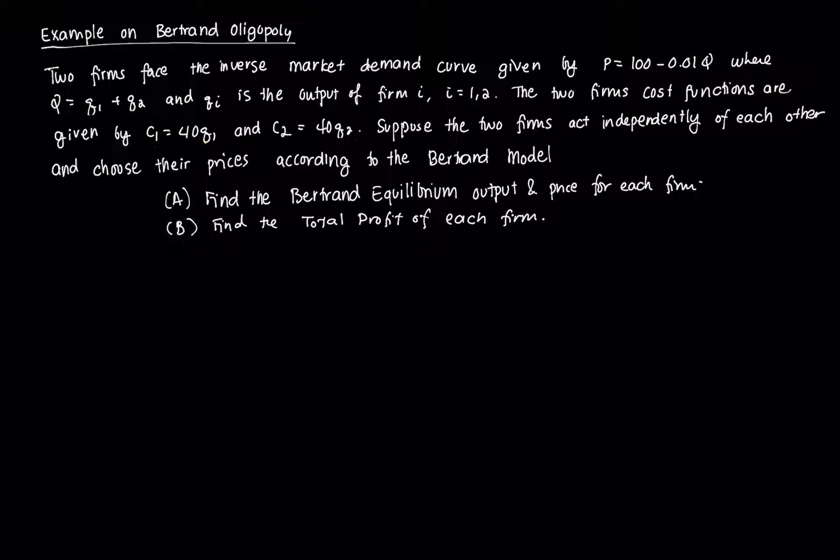In this case two firms face an inverse demand function equal to this one, P = 100 - 0.01Q. We have here Q which is just the sum of the output supplied by two firms. So this is a duopoly case, Q1 plus Q2. We notice that each firm has a very similar cost structure.